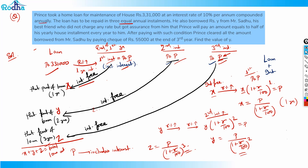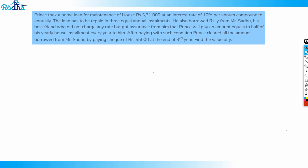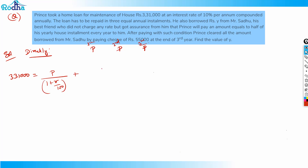Now let's move to the main question. Remember this concept — you can use it in all CI installment questions. The loan amount is 3,31,000. All three installments are equal at rupees P. The interest-free value of the first installment is P / (1 + r/100), second is P / (1 + r/100)², and third is P / (1 + r/100)³.